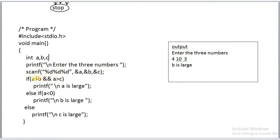The condition checks if A is greater than B and also C. If true, the immediate statement executes and the message 'A is large' is displayed. If false, control goes to the else statement. The else contains another if, because there are three options. If the first condition is false, A is not the largest; the remaining two are B and C. If the inner condition is true, 'B is large' is displayed; otherwise 'C is large' is displayed. Only one of these three statements is executed, not both.